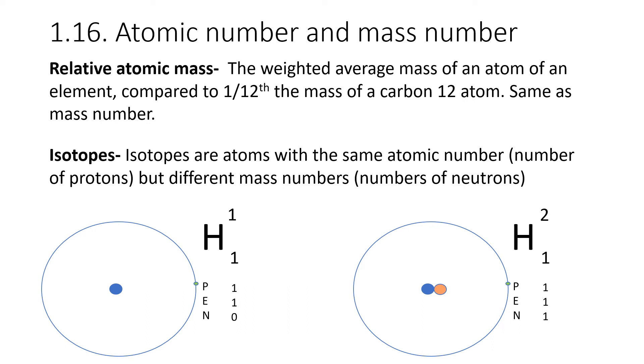There are two more definitions that you need for this specification point. Relative atomic mass is the weighted average mass of an atom of an element compared to one-twelfth the mass of a carbon-12 atom. This is the same as the mass number. The fact that this is a weighted average will become clear later when we start looking at isotopic abundances. But that's the definition that you want to memorize.